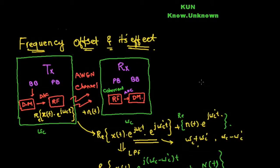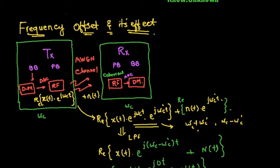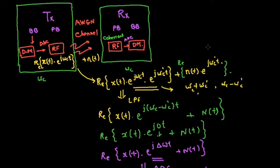Welcome back to the second video on frequency offset and its effect on time domain systems. In this video we are going to discuss how we do the programming and see all the minute details of what happens when we change parameters. Just to recap, in the previous video we saw how frequency offset comes into existence — during the up conversion and down conversion process, because of the oscillator mismatch, we end up having extra phase on the demodulated received symbols.